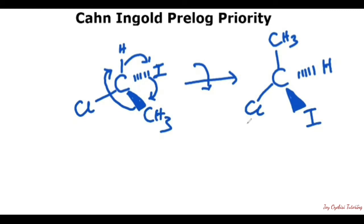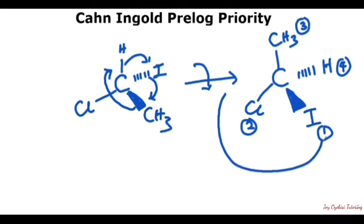Now that we have this, we can assign the numbers. Iodine is the highest priority so it will have 1, then chlorine is 2, CH3 is 3, and hydrogen is 4. If we draw out the arrow, it will move from iodine to chlorine, then back to CH3, and that will give us the R configuration.